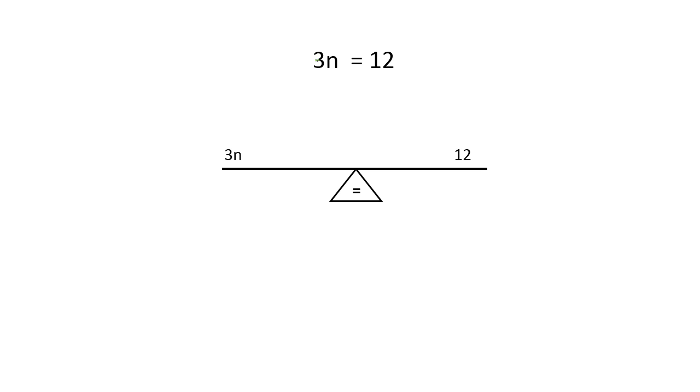When I look at 3 times n equals 12, I'm trying to figure out what n is. So I have to undo what's being done to the n. Right now, I have 3 times n. Well, the way that we undo multiplication is to divide. So I'm going to divide both sides by 3 and see what happens.